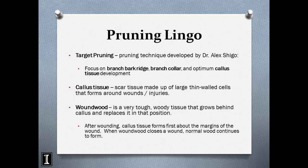Target pruning is a technique developed by Dr. Alex Shigo. The focus is on the concept of branch bark ridges — knowing what a branch bark ridge is. Callous tissue is scar tissue made up of large, thin-walled cells that forms around a wound or injury. Callous tissue contains very little lignin, which is the glue that bonds cellulose and hemicellulose together — and cellulose and hemicellulose with lignin is wood.